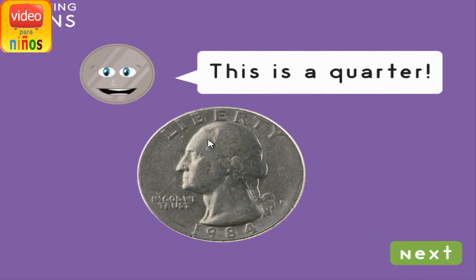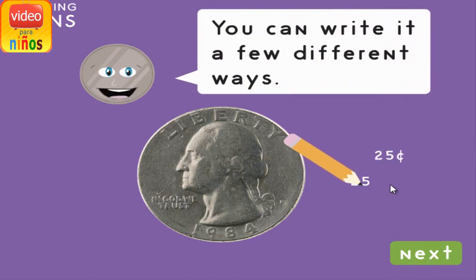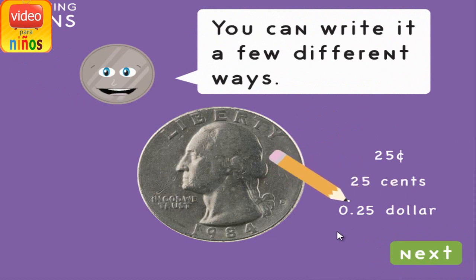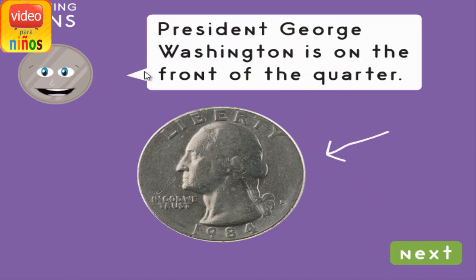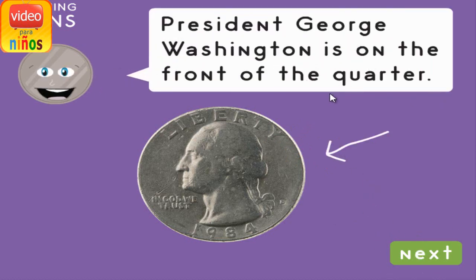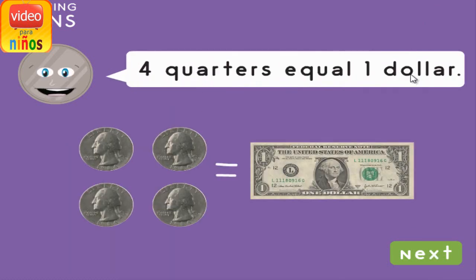This is a quarter. A quarter is worth 25 cents. You can write it a few different ways. President George Washington is on the front of the quarter. The presidential coat of arms is on the back of the quarter — it is an eagle with its wings spread out. Four quarters equal one dollar.